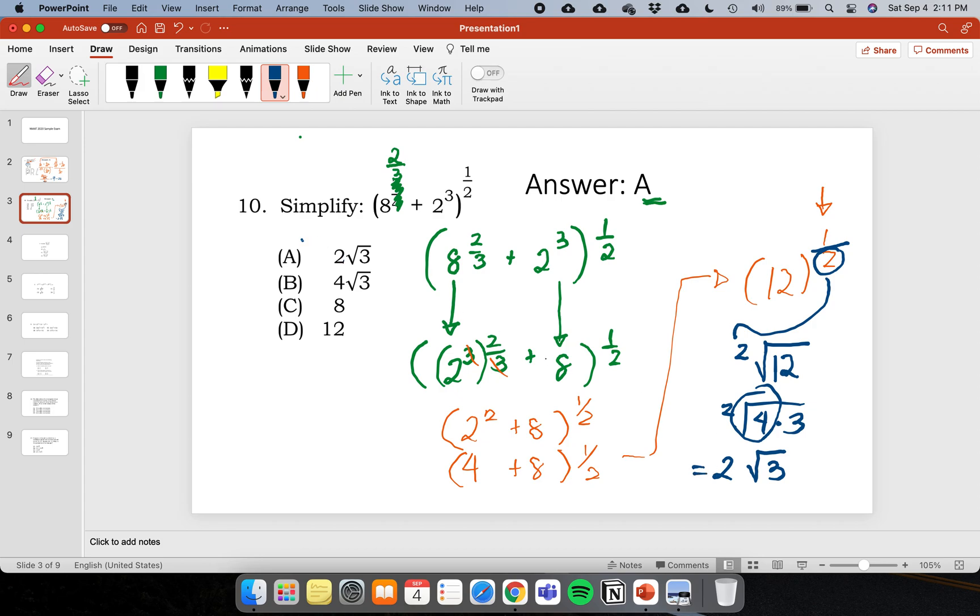So this is letter A. But this only happens if you change the exponent here as 2 thirds.